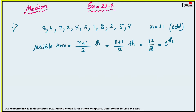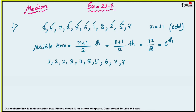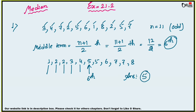Remember, six is not your answer — first you have to arrange the data in ascending order. So: 1, 2, 2, 3, 4, 5, 5, 6, 7, 7, 8. Now find the 6th observation: 1st, 2nd, 3rd, 4th, 5th, 6th — your 6th observation is 5. So your median is equal to 5.